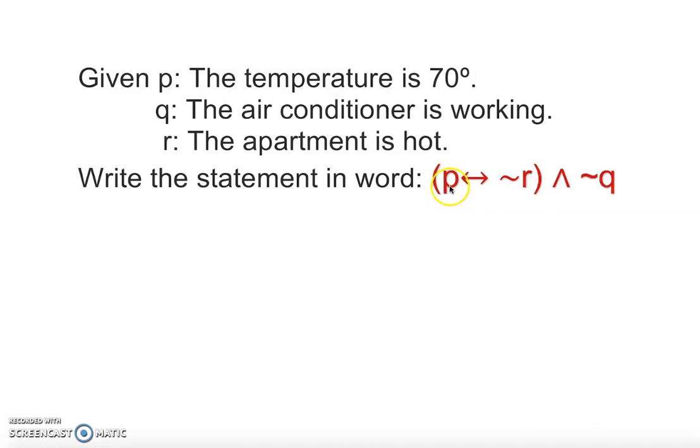p: the temperature is 70 degrees if and only if r, in this case the apartment is hot, the apartment is not hot.